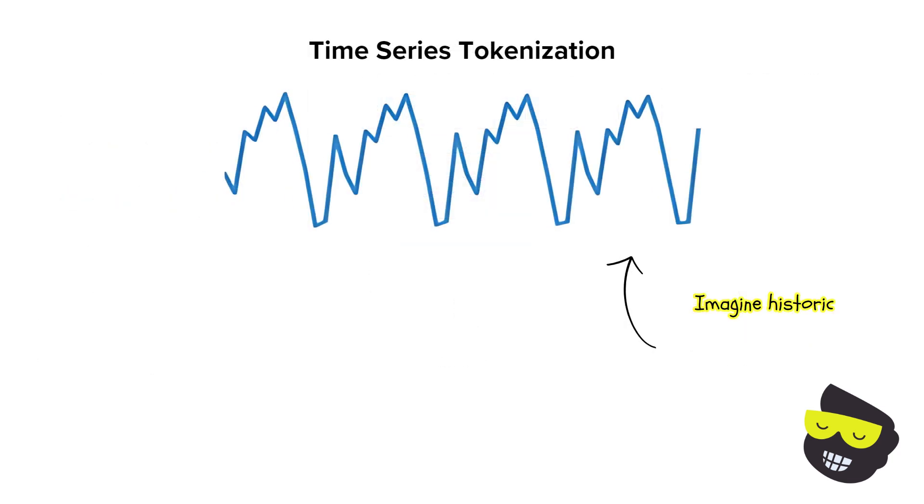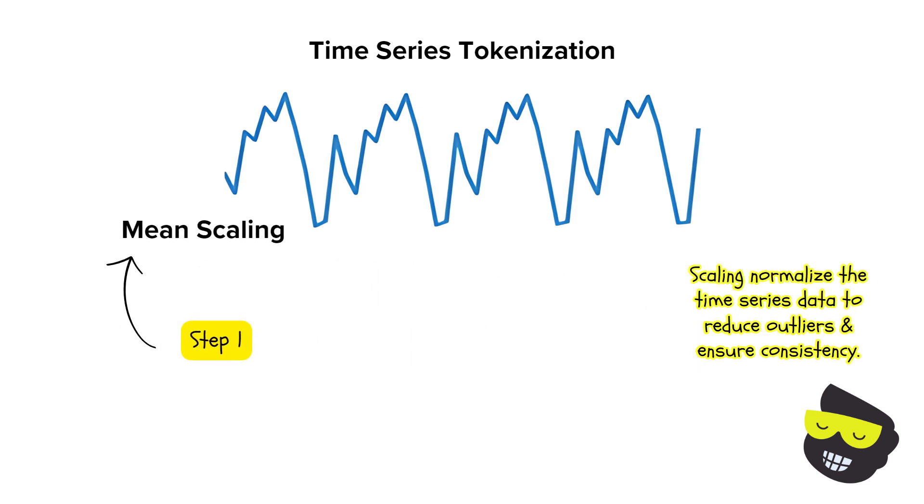Tokenization. This is the first one. Imagine that you have historical time series data of temperatures. So 72, 75, 78, 76, 73. The first step in Chronos process is tokenization, where continuous data points are converted into discrete tokens. Here's how it works. The first step in tokenization is mean scaling, where the time series data is normalized to ensure it fits a manageable range.